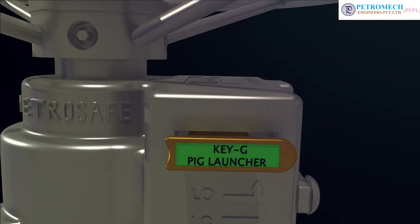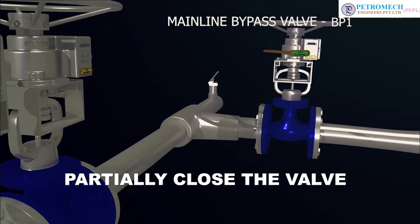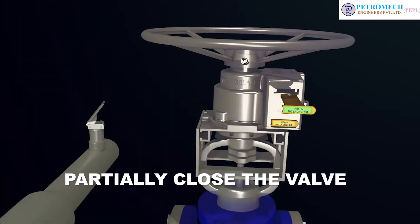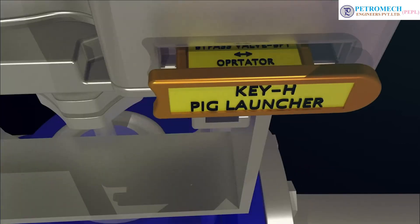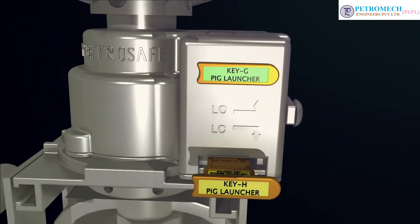Step 17: Insert key G into main line bypass valve BP1. Step 18: Close the valve till the pig will be launched successfully and release key H.